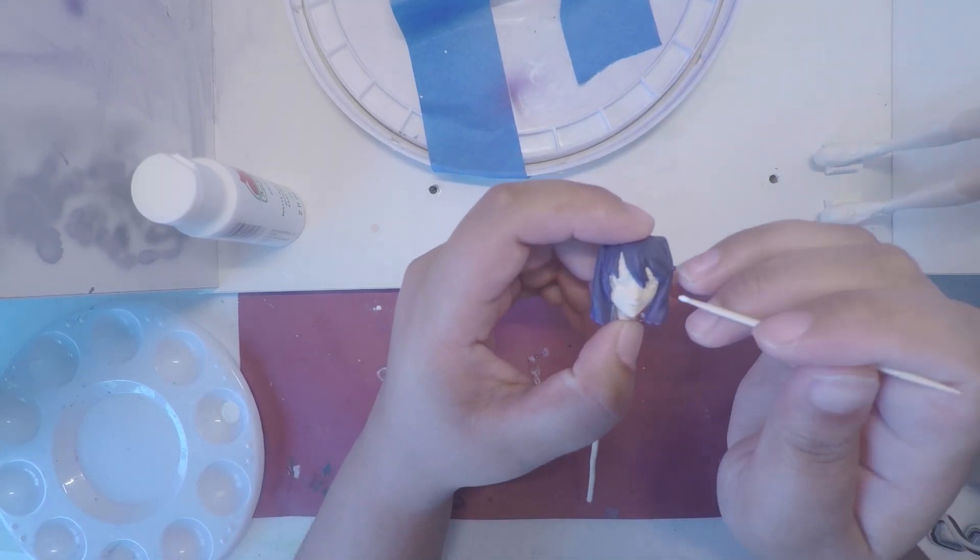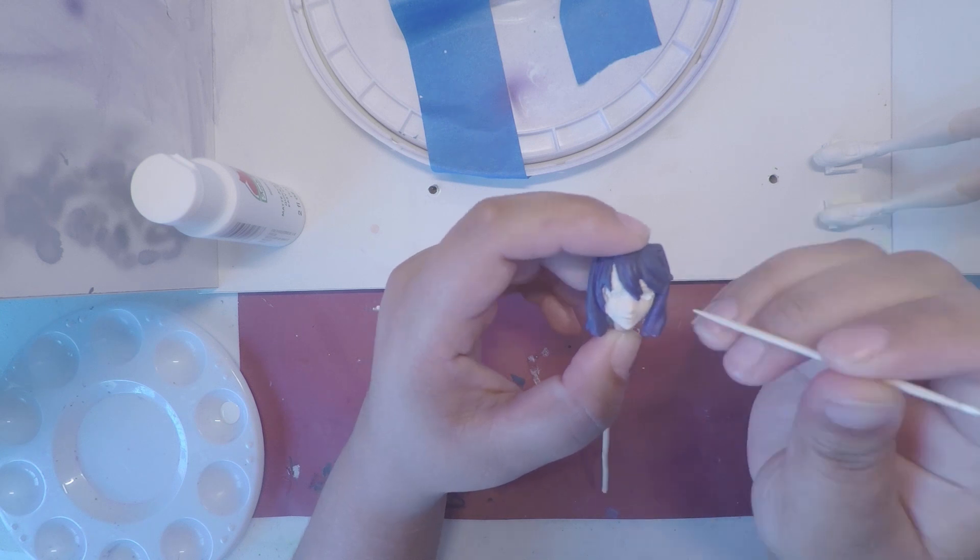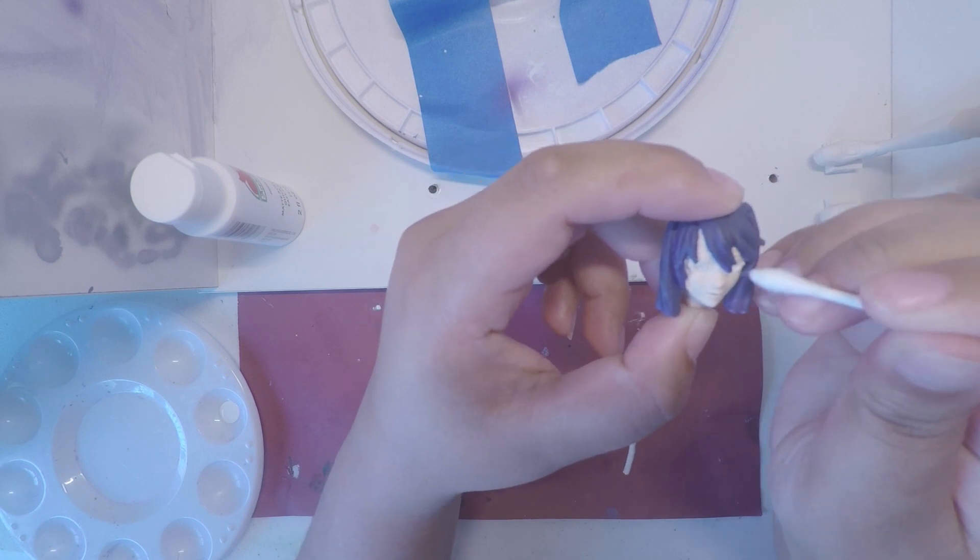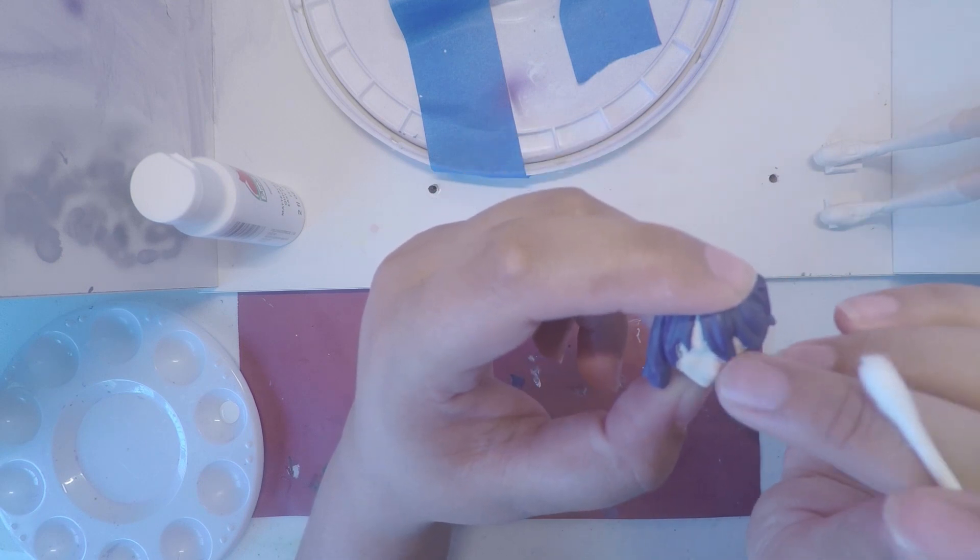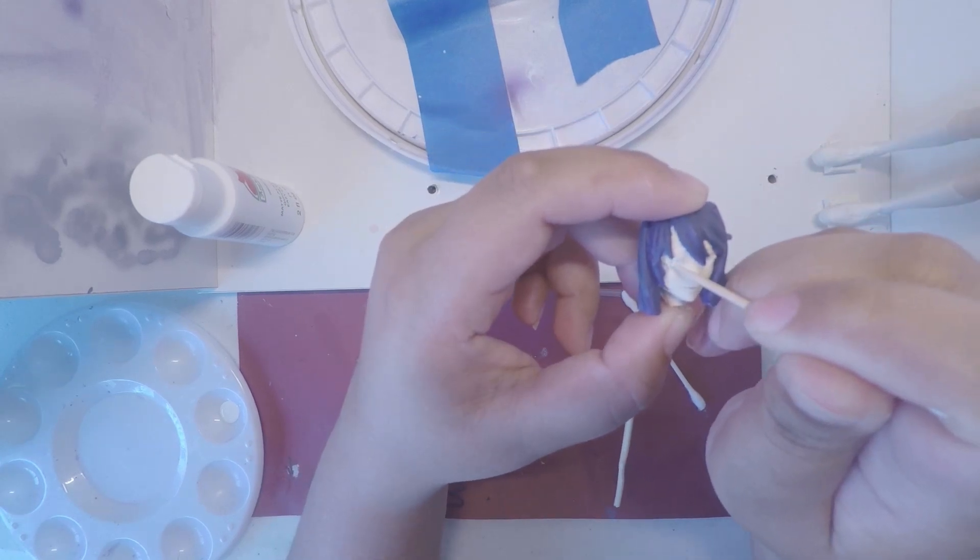Time to paint Yuri's face. I was really nervous about this part, as faces can really make or break a model. I think my first attempt came out pretty decent, but I definitely could have improved. First, I added whites to Yuri's eyes with a toothpick. I cleaned up the edges with a Q-tip.